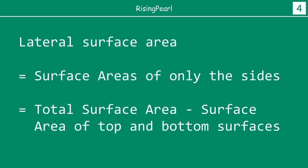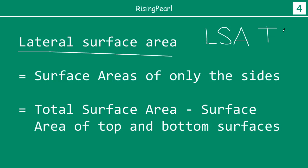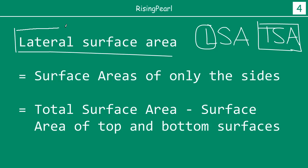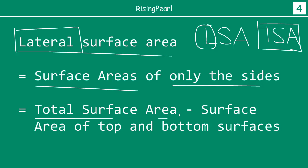Now let's look at what is meant by lateral surface area, abbreviated as LSA. The total surface area is sometimes written as TSA. The lateral surface area is the surface area of only the sides — the top and the bottom are excluded. That means you take the total surface area and subtract the surface area of the top and bottom surfaces.